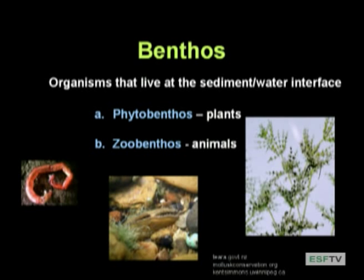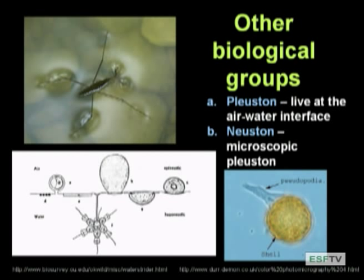Other groups exploit the surface of a lake. Pleuston live at the air-water interface — things like water striders, which exploit the surface tension to scoot across the surface. We also have a whole bunch of microscopic pleuston called neuston living at that surface — protozoans, amoebas, and all kinds of photosynthetic organisms. If you snorkel in a lake and look at the surface film, it's covered with organisms exploiting the air-water interface, eating bacteria and other particles. Fly fishermen may know that some things hanging out at the pleuston make good bait for trout.